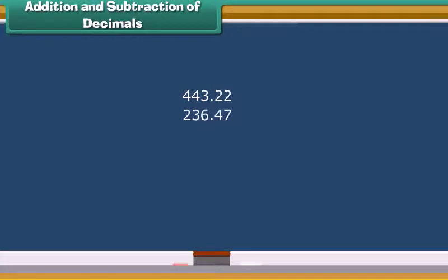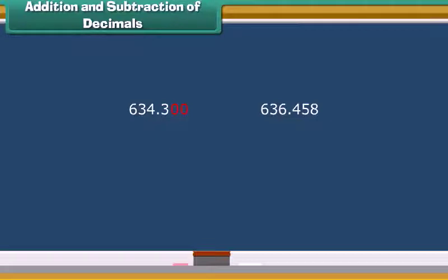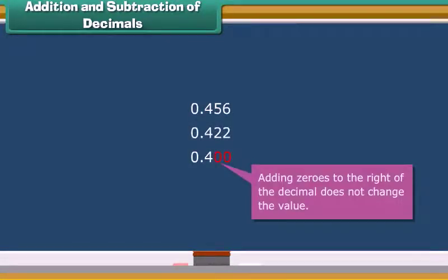Decimals are easier to add or subtract just like the whole numbers. For this purpose, you have to line up the decimals first. See, it's easy. Also, decimal numbers are easier to compare just by adding zeros at the end of the shorter number to make the numbers of same length. And you can tell right away which number is bigger. Remember, adding zeros to the right of the decimal does not change the value.